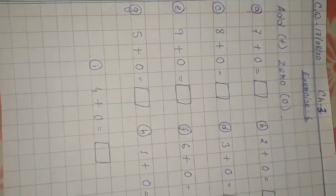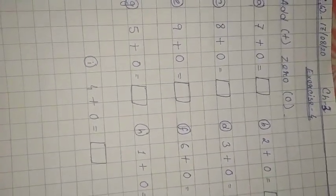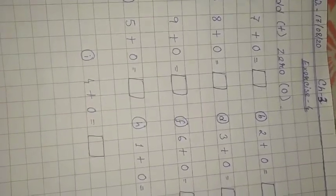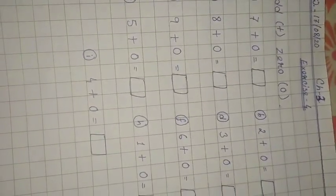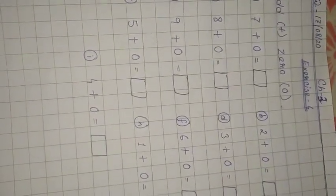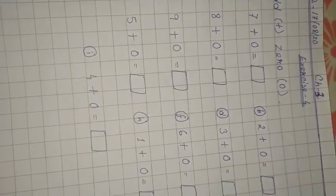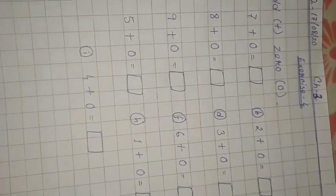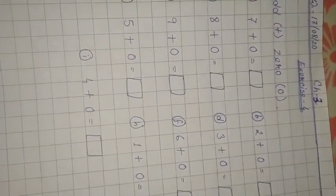We all know what happens on adding 0 to a number. Yes, adding 0 to a number gives the same number. When we add 0 to a number, the result is just the number. It is unchanged.